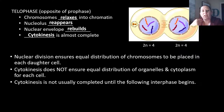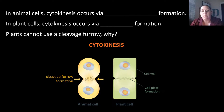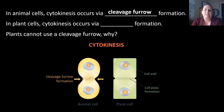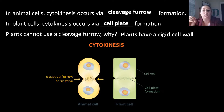Cytokinesis is not usually completed until the following interphase begins — it starts and is almost finished at telophase, but completely finishes once the cell enters the next interphase stage. In animal cells, cytokinesis happens through what we call a cleavage furrow — it pinches inward creating that cleavage. In plant cells, this must be done differently because of the cell wall — cytokinesis occurs via cell plate formation, where they build a wall between the two new cells. Plant cells cannot use the cleavage furrow because of their rigid cell wall.